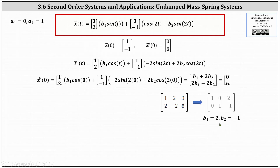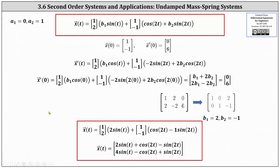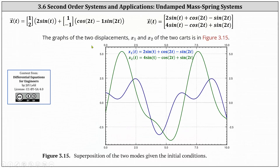Substituting these values into x of T gives the particular solution, which can be expressed in either of two forms. The two displacement graphs show x one of T equals two sine T plus cosine two T minus sine two T, graphed in blue, and x two of T equals four sine T minus cosine two T plus sine two T, graphed in green.